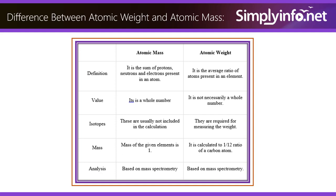The mass of the given element is 1 in atomic mass, whereas in atomic weight it is calculated to one twelfth ratio of a carbon atom. Atomic mass and atomic weight are both based on mass spectrometry.